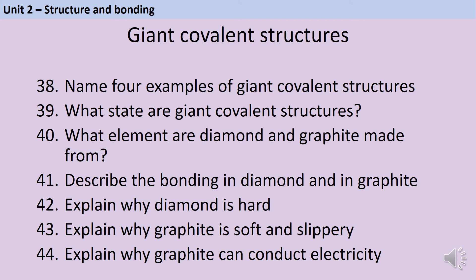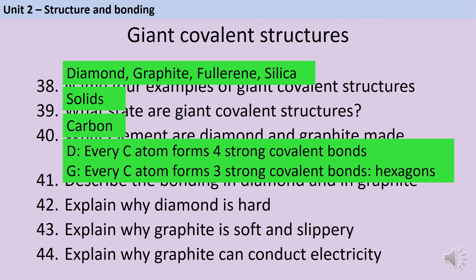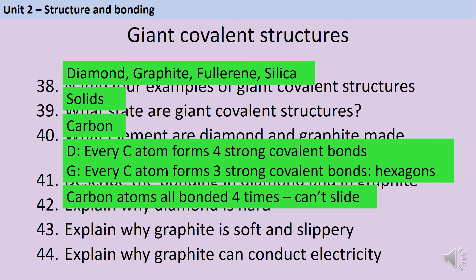The four named examples of giant covalent structures in the specification are diamond, graphite, fullerenes, and silica. Giant covalent structures are always solids at room temperature. Diamond and graphite are both made from carbon. In diamond, each carbon atom makes four strong covalent bonds; in graphite, each carbon atom makes three strong covalent bonds, leaving one electron free to be delocalised. In graphite, these carbon atoms form hexagonal structures. Diamond is very hard due to the strong covalent bonds, which prevent all carbon atoms from moving. Graphite is soft and slippery because the carbon atoms are arranged in hexagonal sheets that can easily slide over each other, as there are no bonds between the layers. Graphite can conduct electricity due to that delocalised electron from each carbon atom, which is free to move and carry charge.